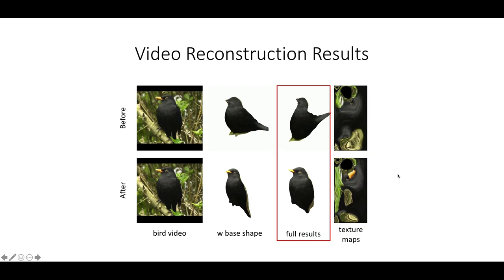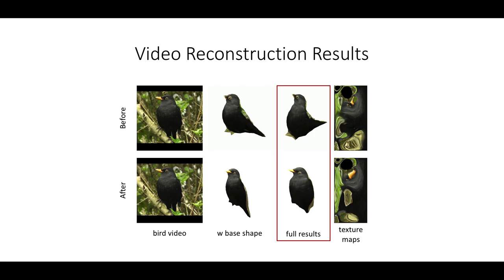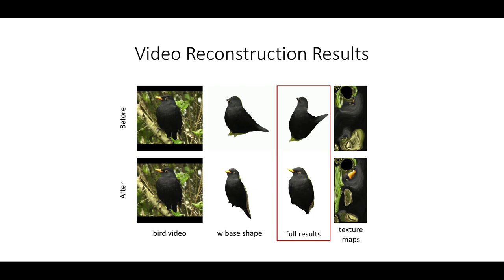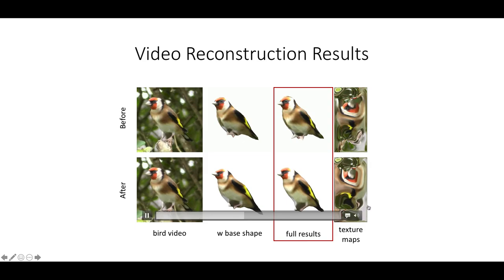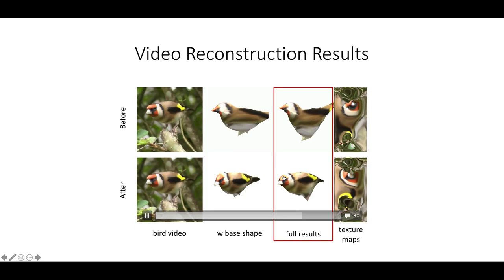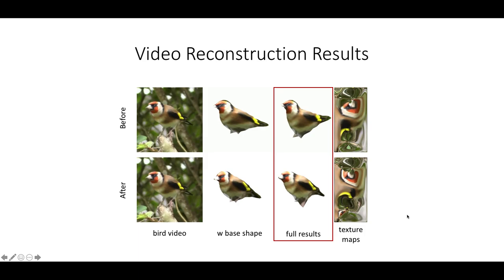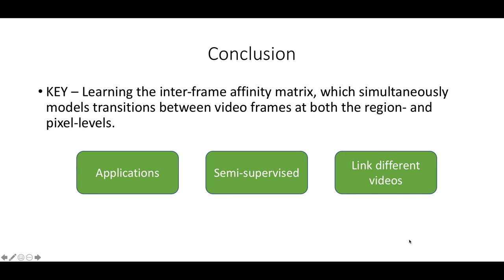By using this loss, we can generate much more stable and temporally coherent dynamic mesh reconstruction results using the proposed method. Here is another example where we can see that after the tuning using the temporal consistency from the video correspondence learning algorithm, we can have much more refined results for the mesh reconstruction. All of these are trained in a self-supervised manner. There are no additional annotations annotated to videos.